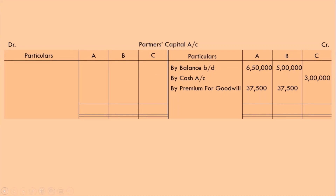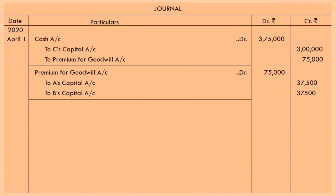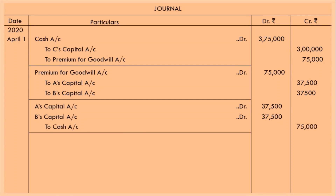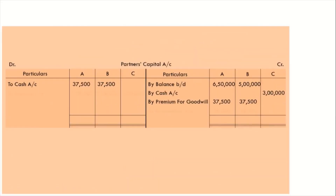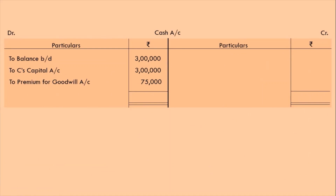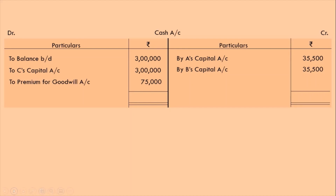Goodwill brought by C shall be withdrawn by A and B. So A and B are withdrawing their amount, which will reduce their capital. Entry: A's capital account debit, B's capital account debit, to cash — as cash is going out of the business. Let's record this in the partners' capital account: to cash, recorded on the debit side as it decreases capital. In cash account, as cash is decreasing — cash has debit balance, to decrease debit we credit — so record on credit side.